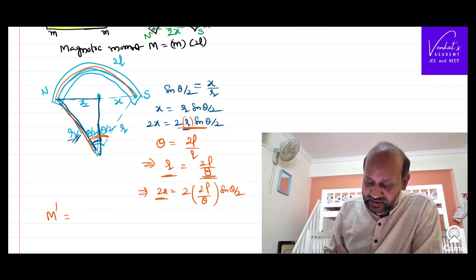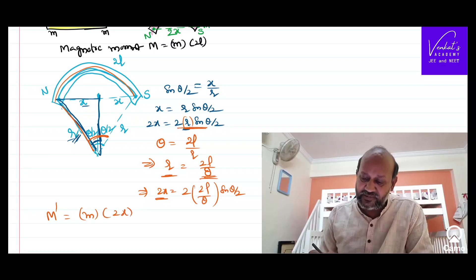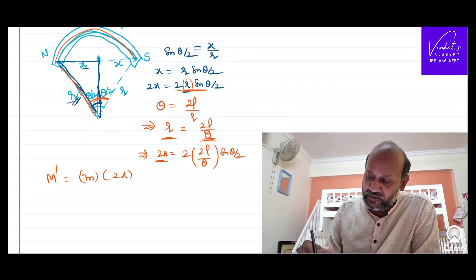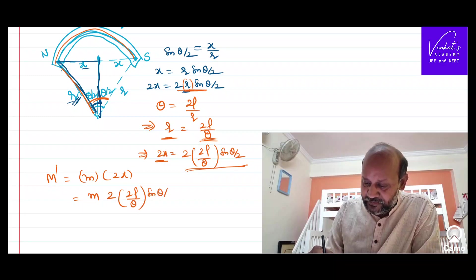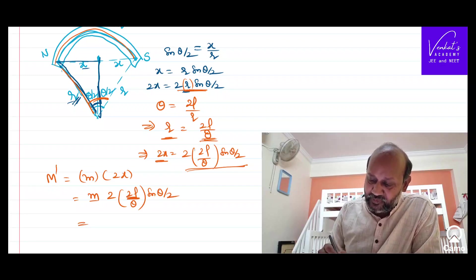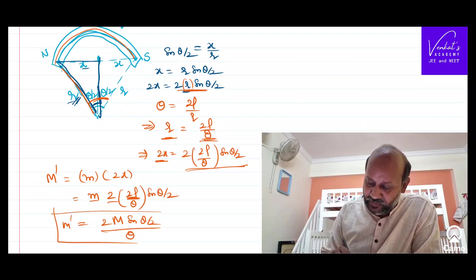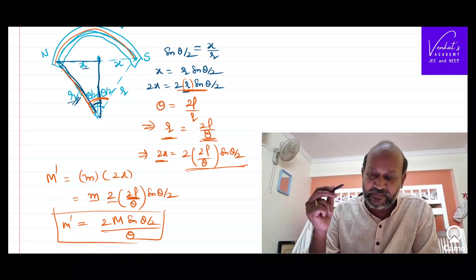So what's the new magnetic moment? Pole strength and the distance between the poles. Pole strength remains same as I said earlier, that is M. And I know the value of 2x already. So pole strength is M, in the place of 2x, substitute this value: 2, 2L by theta sin theta by 2. You know small m into 2L is the original magnetic moment of the bar magnet, that is capital M. There is 2 sin theta by 2 by theta. This is the new magnetic moment when you convert the bar magnet into a shape.